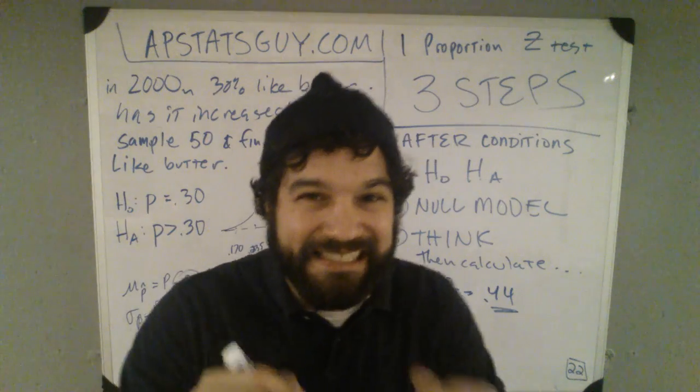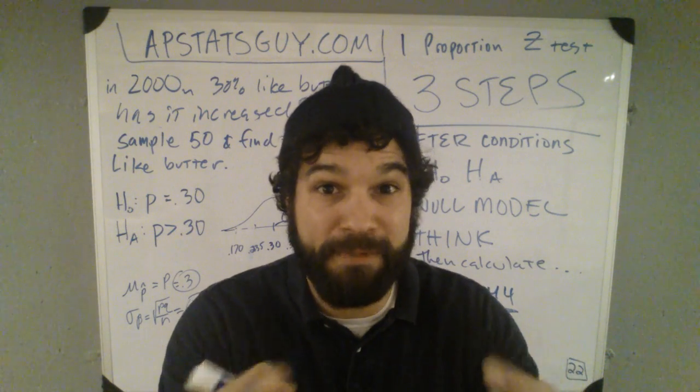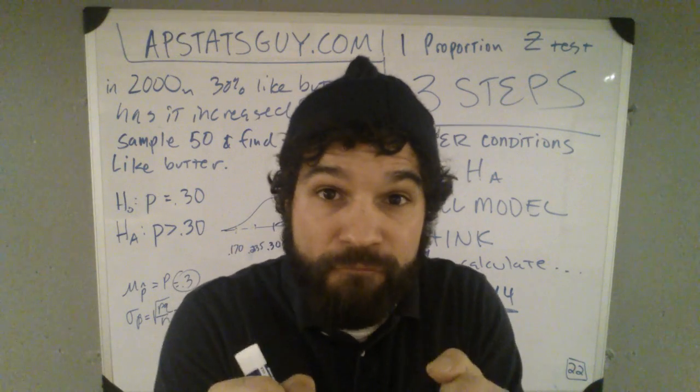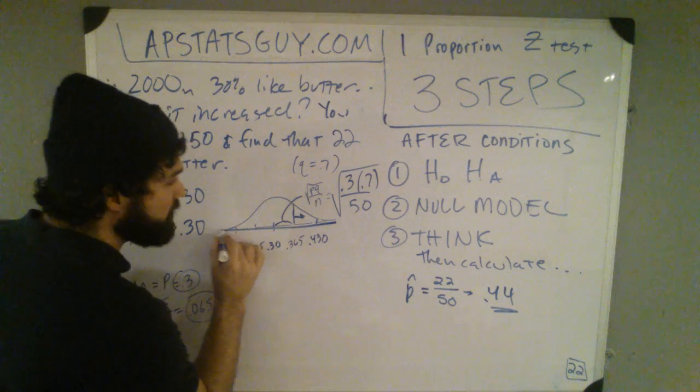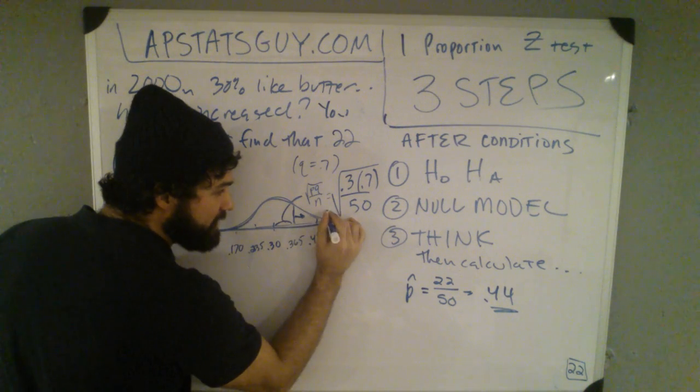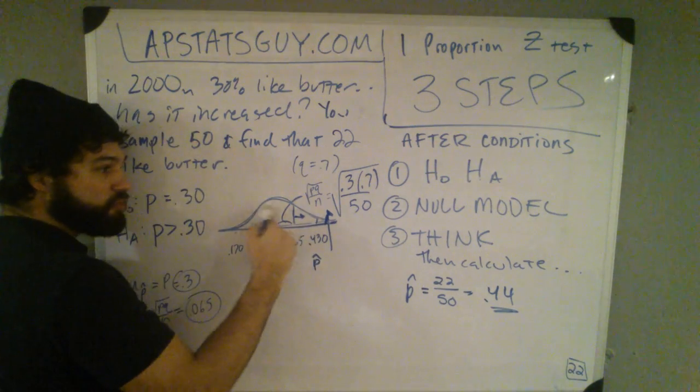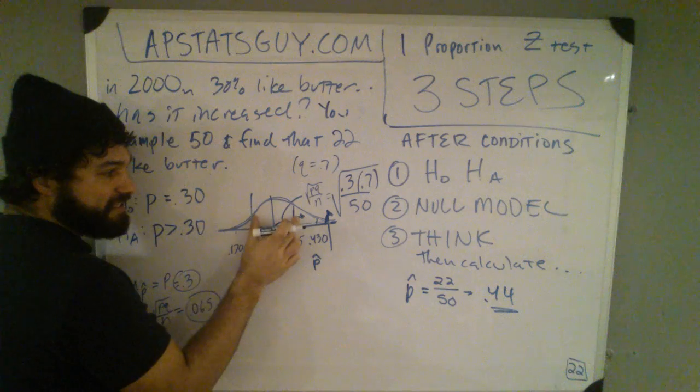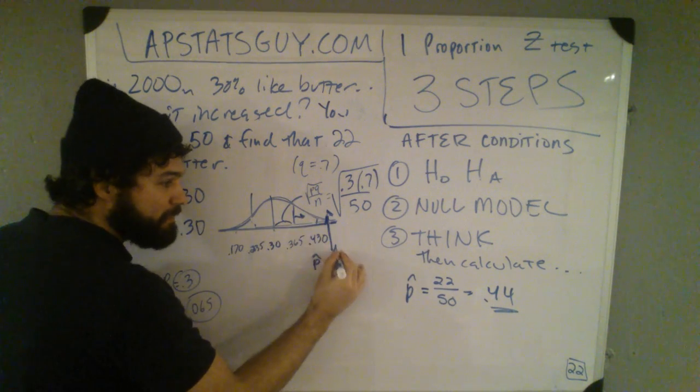44% of my sample liked butter. Now let's see, what does that mean? Let me take a look. Where would 44% be on the null model? Let's see. Where's 44% on, oh my god, 44% is out here. That's my p-hat is way out there. This is where most of the p-hats are, 68% of the p-hats are here. How likely is that to happen randomly?